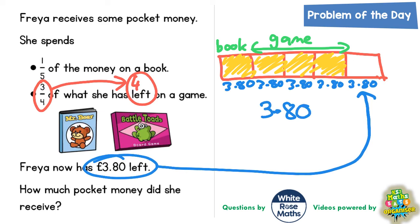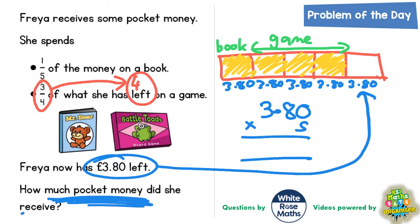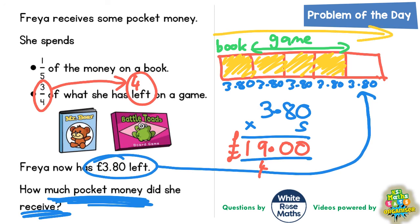We've got five pieces all worth £3.80, so we do £3.80 multiplied by five using a column method to figure out what the whole bar is worth. Five lots of nothing is nothing, five lots of eight is 40 — put the zero in, carry the four. Five lots of three is 15, plus the four is 19. Put your decimal point in, put your pound sign in, and there's your final answer: she must have received £19 at the start.